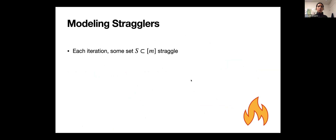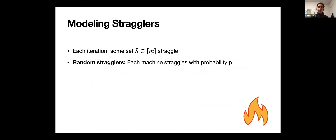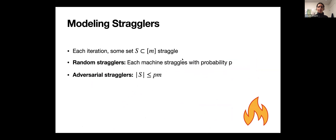We'll discuss two models for stragglers. Let S be the subset of stragglers out of m total machines. The first model is random stragglers: there's some parameter p and each machine is a straggler independently with probability p. The second model is adversarial stragglers: the set of stragglers can be arbitrary, but its size is bounded by a p-fraction of the total number of machines.